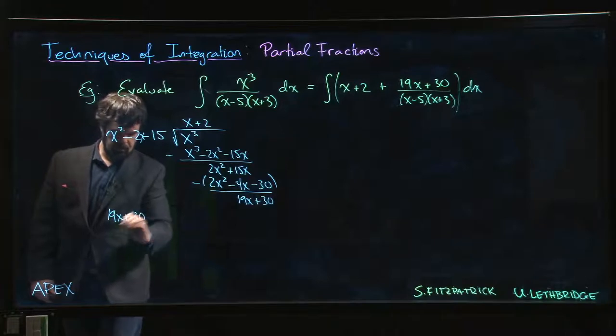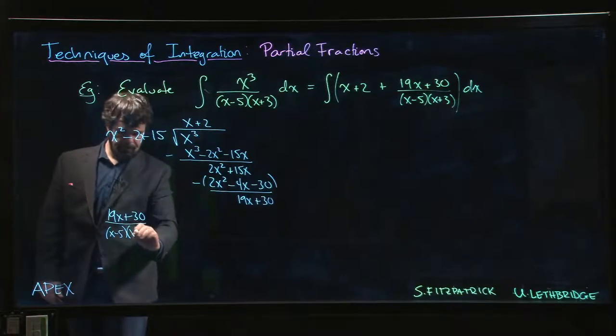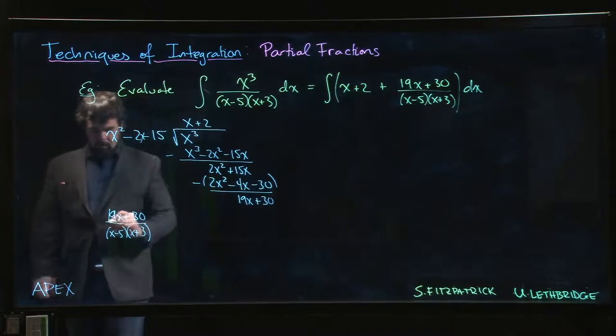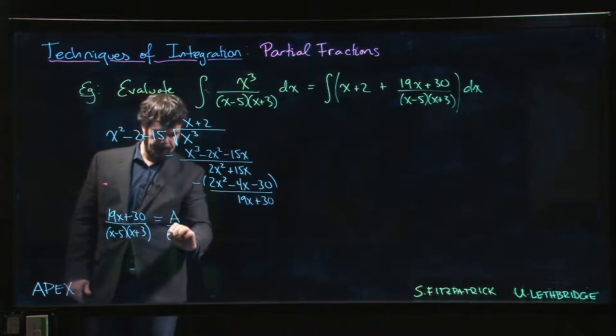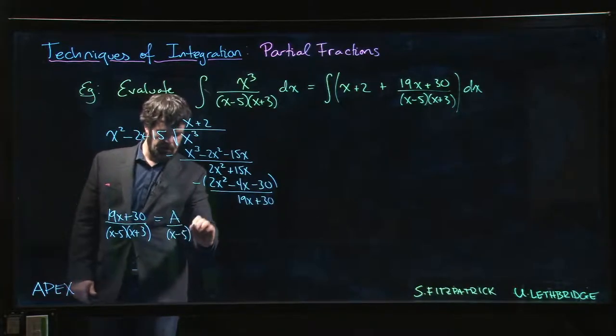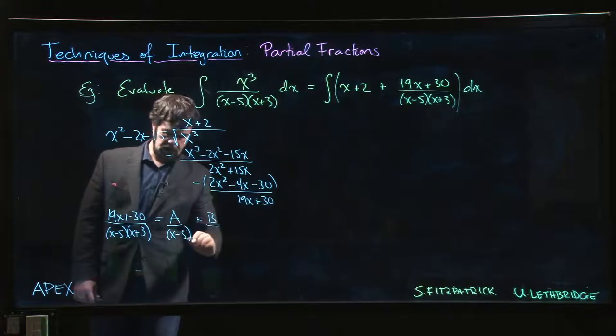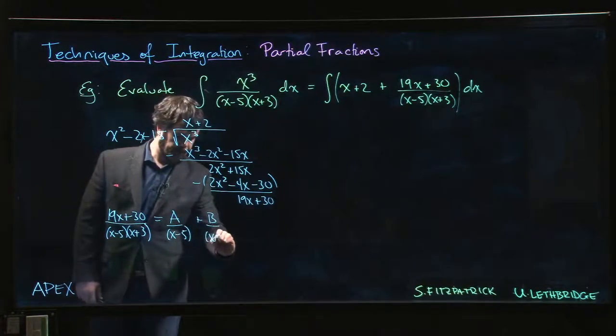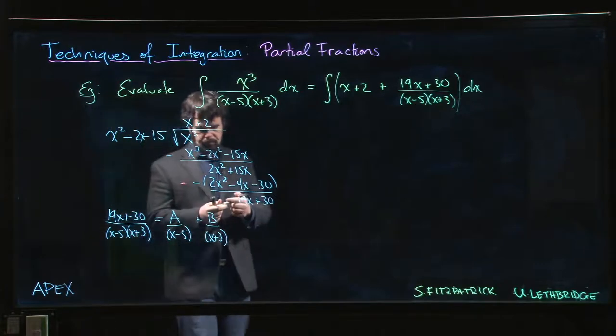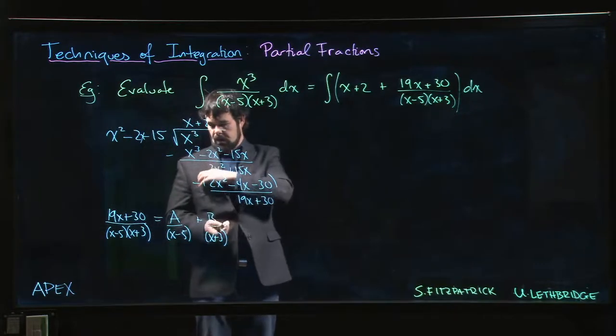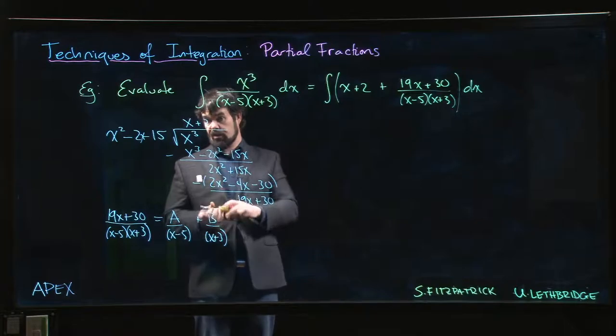We need to have 19x plus 30 over (x minus 5) times (x plus 3). We want that to be a over (x minus 5) plus b over (x plus 3). Now we just have to solve for a and b.